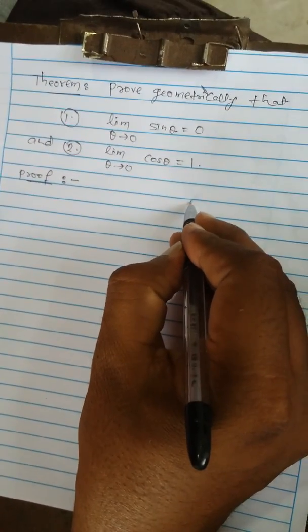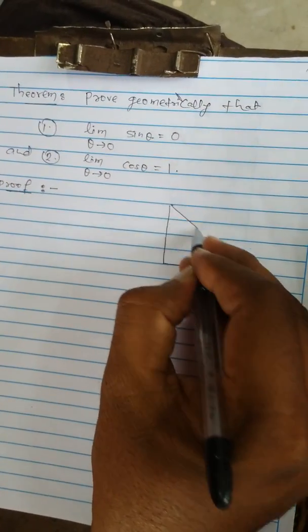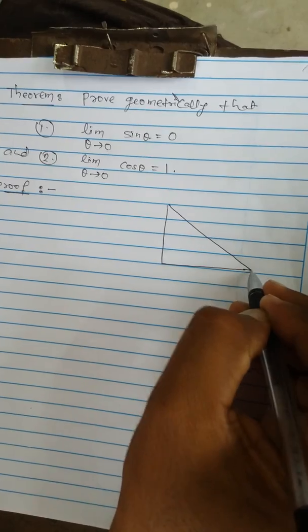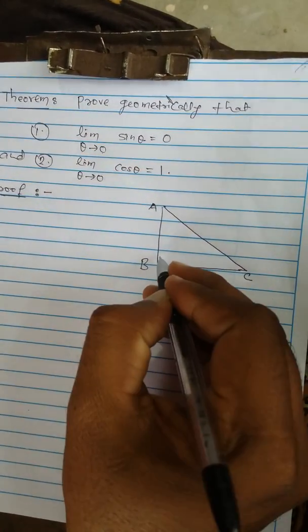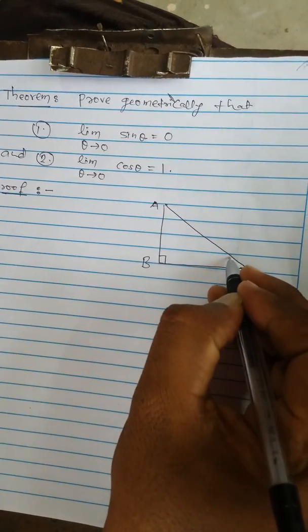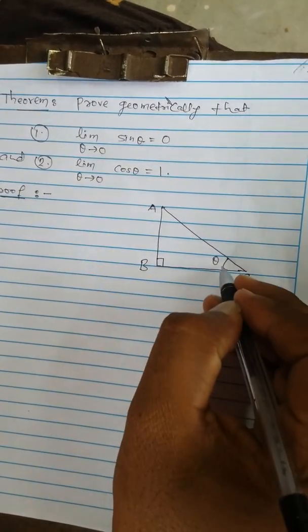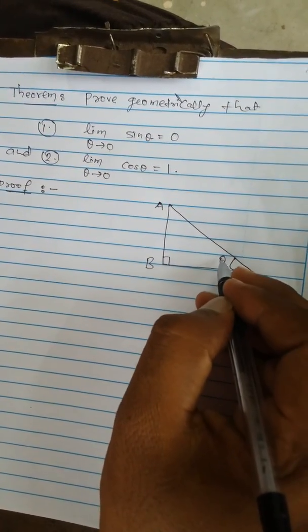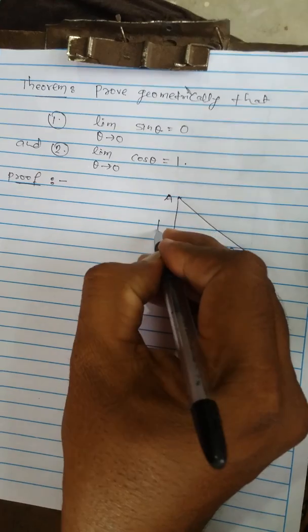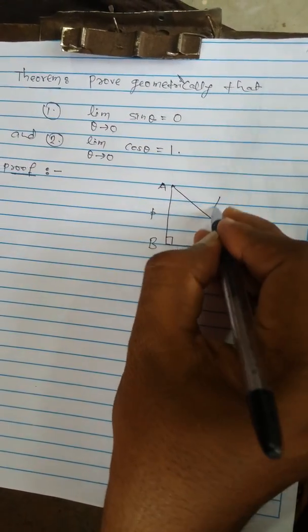Let us construct a right angle triangle named ABC, right angle at P. Suppose this angle is theta. We take the acute angle C to be theta. With reference to angle theta, this one is the perpendicular, this one is the base, and this one is the hypotenuse.